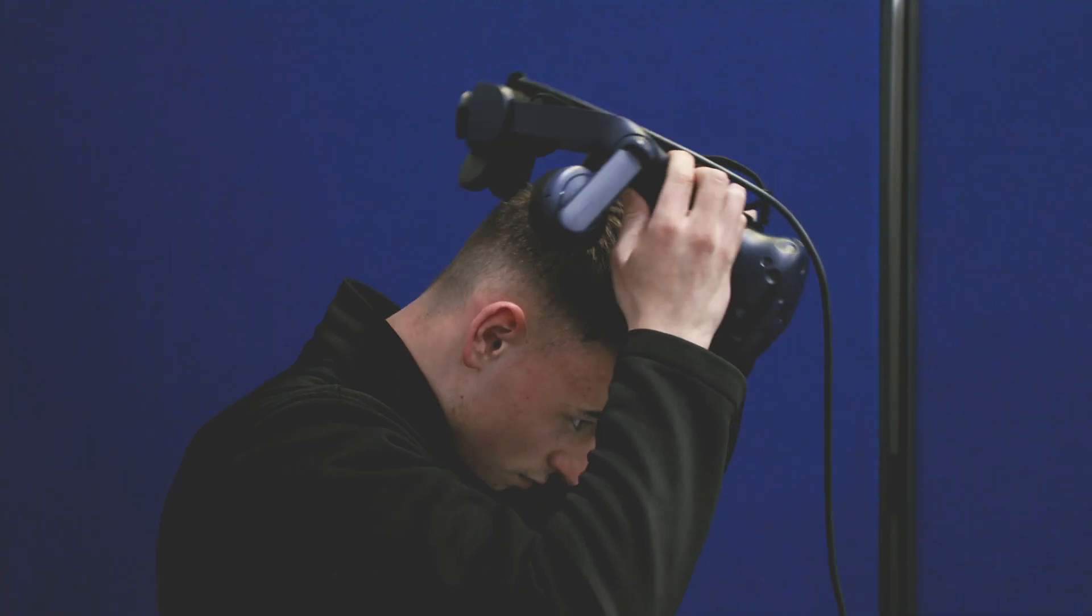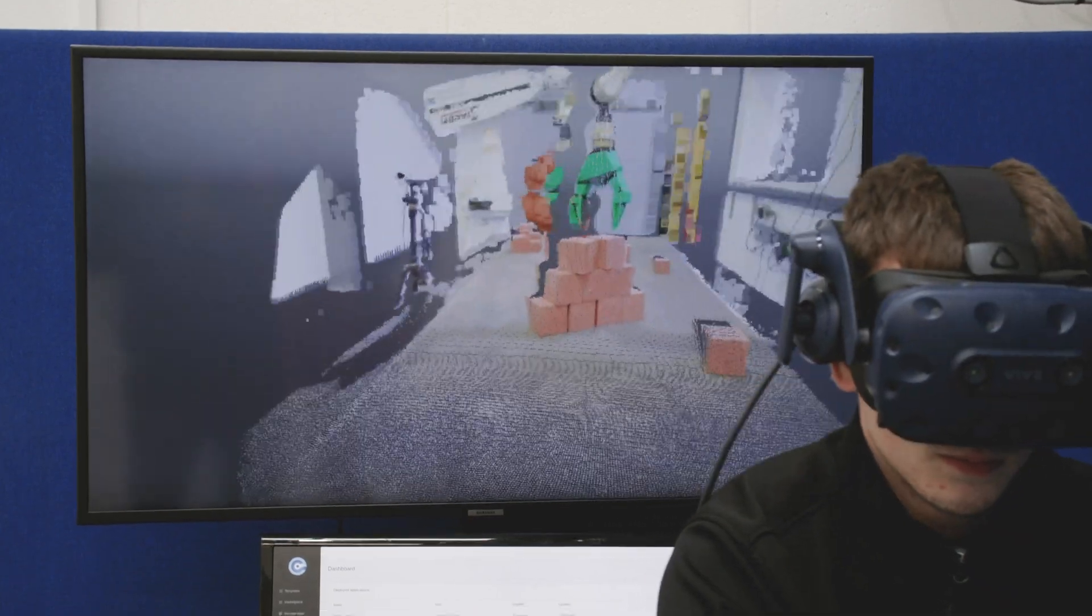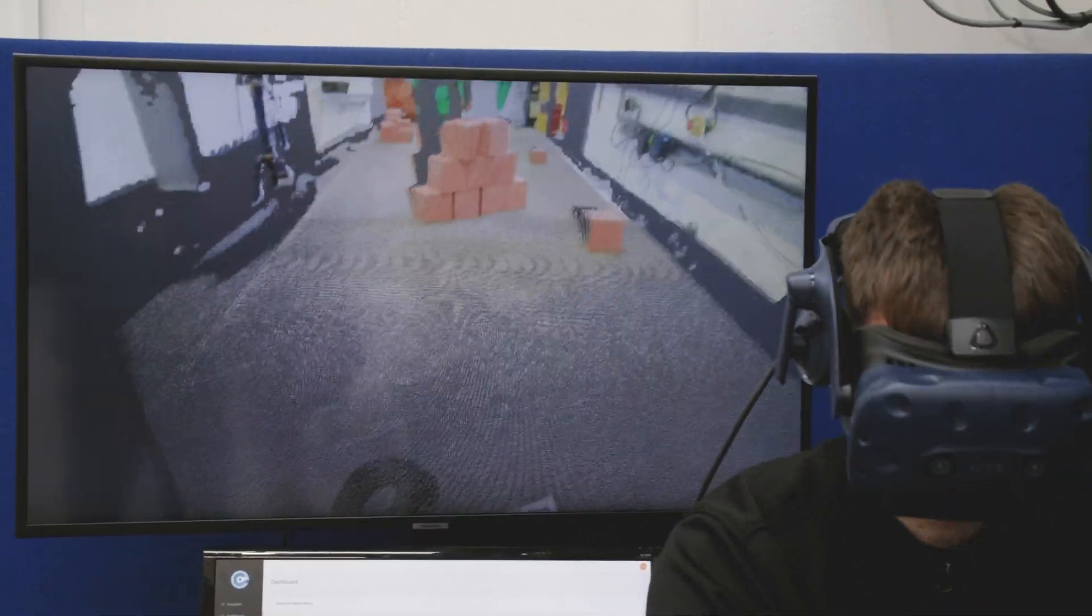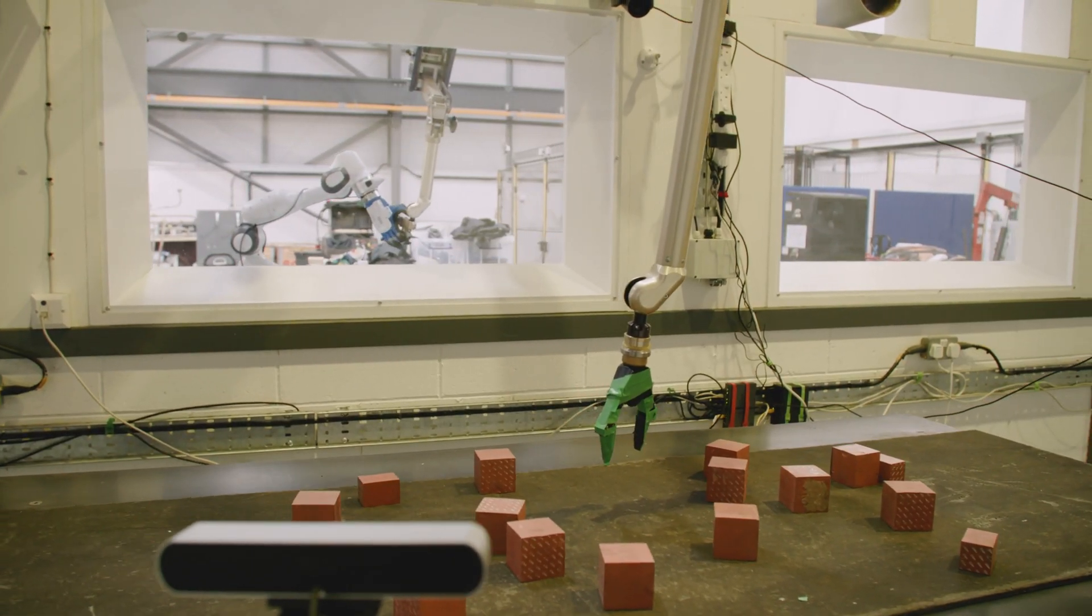The operator can see using the system a whole range of sensors from point cloud data to RGB cameras and stereo vision camera. This range of sensors gives you the full awareness of the surrounding of the environment so that you can perform the task as best as you can.